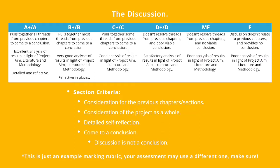Here's an example marking rubric for the discussion section. From this rubric you can see the criteria calls for consideration of the previous chapters, consideration for this project as a whole, detailed self-reflection, and arrival at a conclusion. However, remember the discussion is not a conclusion. So as you can see there's a lot to expect from the discussion — let's tackle this one by one.